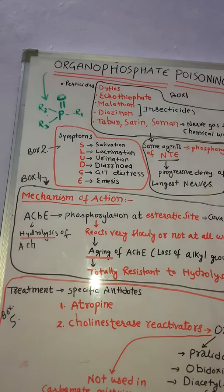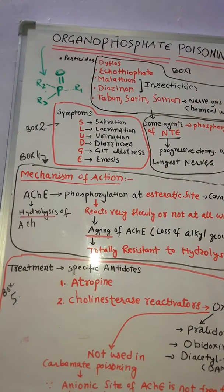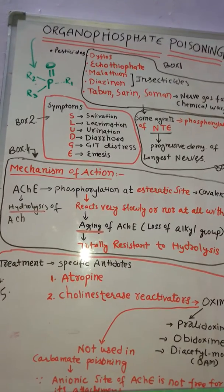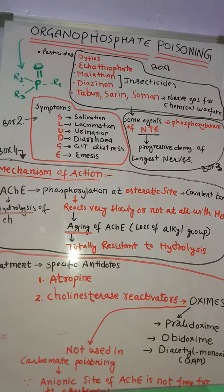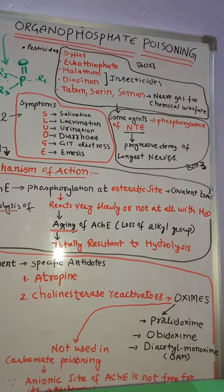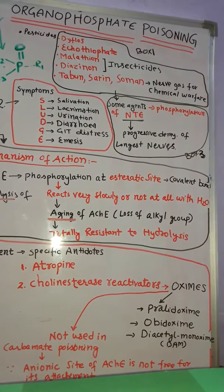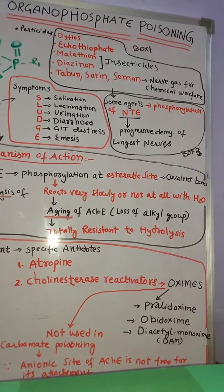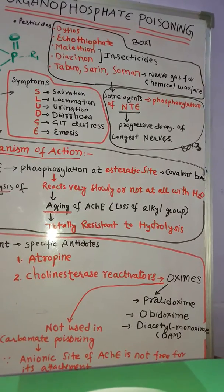The treatment for organophosphate poisoning involves specific antidotes. First is atropine, and second are cholinesterase reactivators, which are basically oximes — for example, pralidoxime, obidoxime, and diacetylmonoxime.